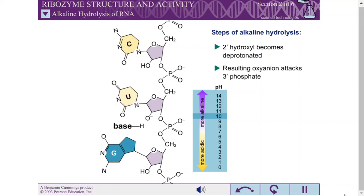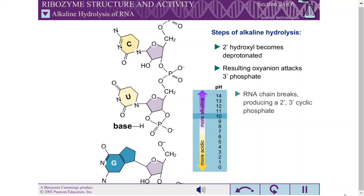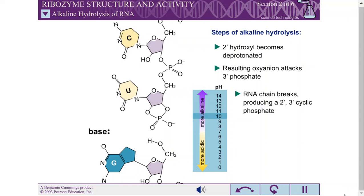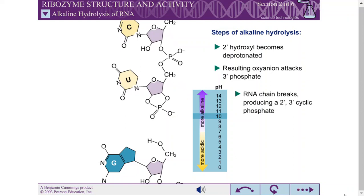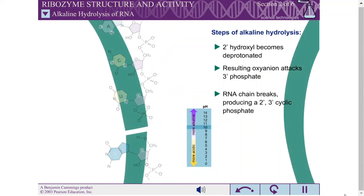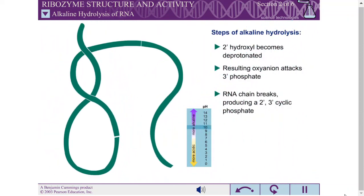This oxyanion can attack the phosphate group at the 3' position of the same ribose. This reaction breaks the RNA chain, producing a 2' 3' cyclic phosphate and a free 5' hydroxyl group. Each ribose in an RNA chain can undergo this reaction, completely cleaving the parent molecule into nucleotides.